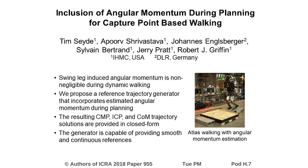When walking at high speeds, the swing legs of robots produce a non-negligible angular momentum rate. In this paper, we propose a reference trajectory generator for capture point-based walking that incorporates angular momentum references at the planning level.